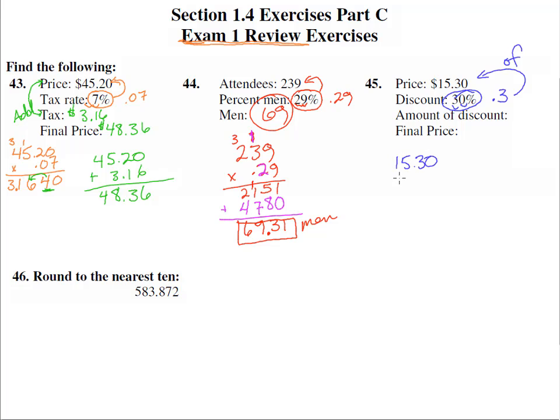Times 0.3. Three times zero is zero, three times three is nine, three times five is 15 carry the one, three times one is three plus one is four.